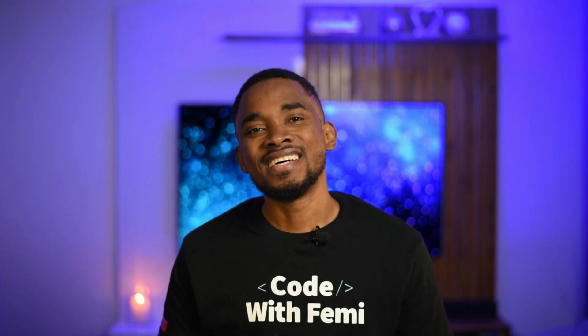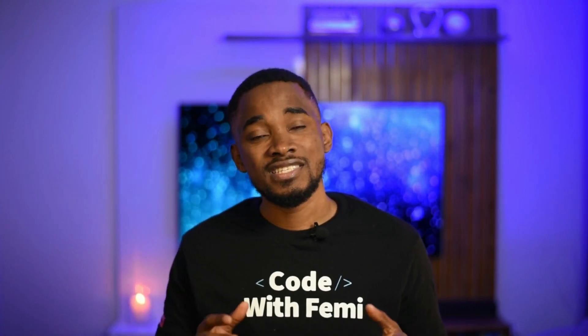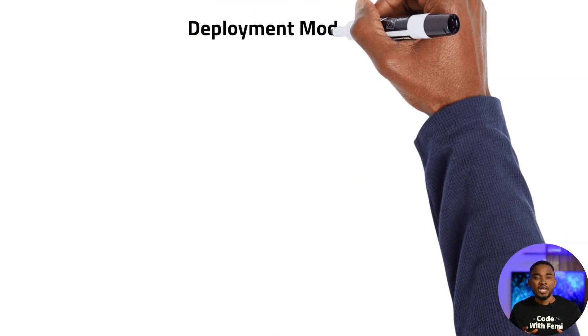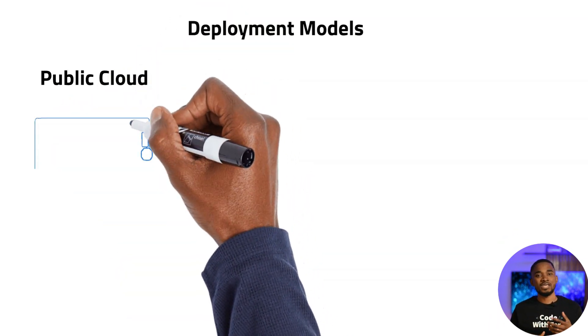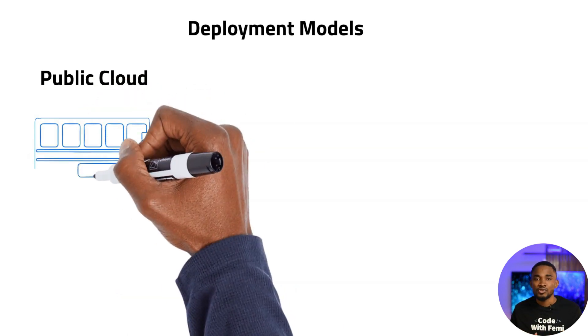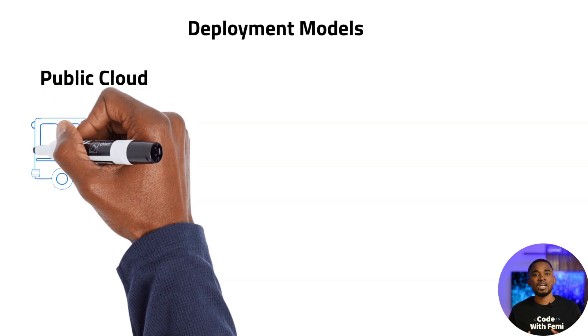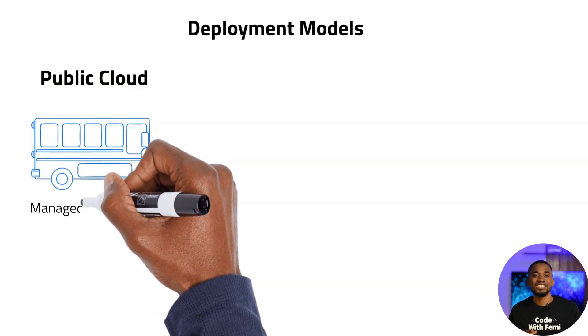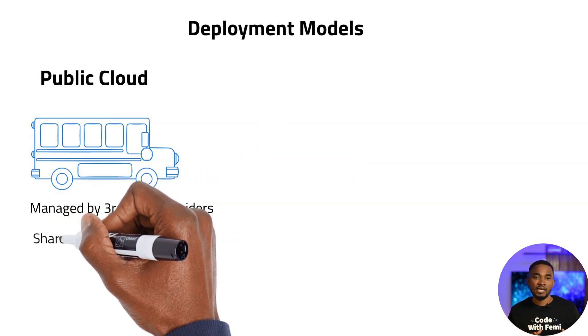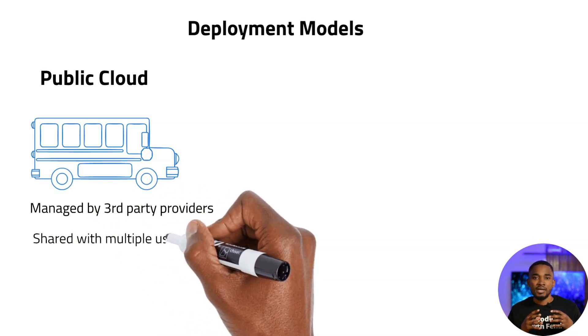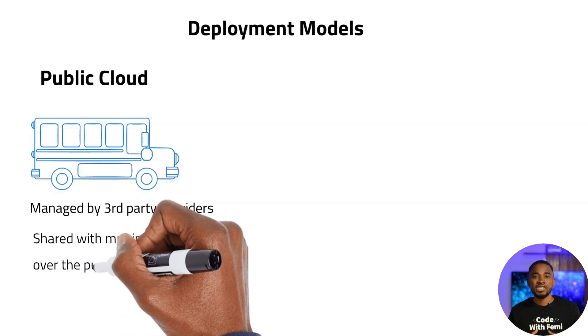Let's talk about the deployment models. We have three main deployment models: public, private, and hybrid. For the public model, it's like being on a bus — a bus you take when commuting to your office. In this bus, you're not alone; you're sharing it with other passengers. This is what the public model is like, where the cloud platform is shared with other users.